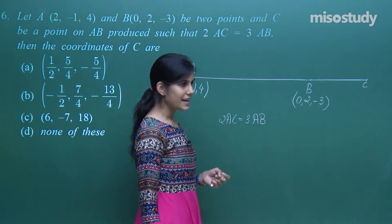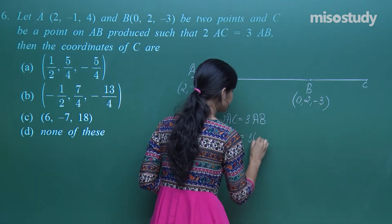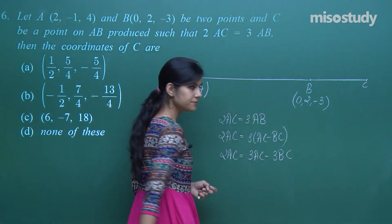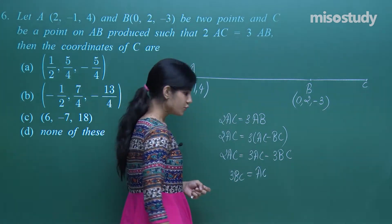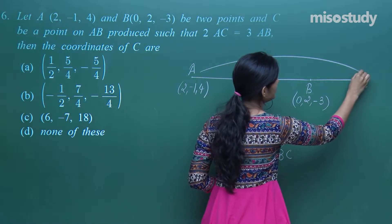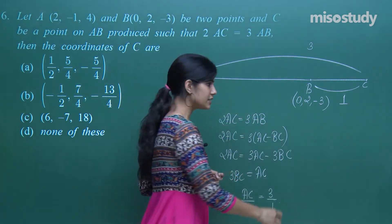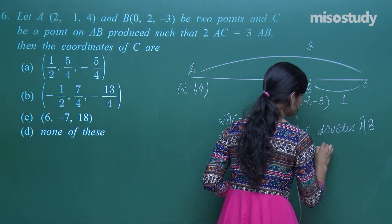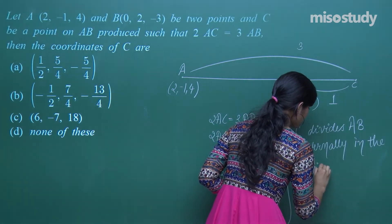The section formula is signaled here. We manipulate: AB = AC − BC, so 2AC = 3AC − 3BC, giving 3AC − 2AC = 3BC, i.e., AC = 3BC. Therefore AC/BC = 3/1. So C divides AB externally in the ratio 3:1.